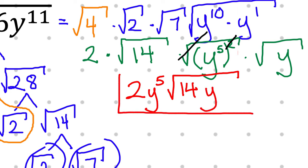Someone explains: we have 2 times the square root of 14 times y to the power of 5 times the square root of y. We combine 2 and y to the power of 5 and put that on the left side because it's no longer square rooted, and then we combine the square root of 14 and the square root of y to create our final expression.